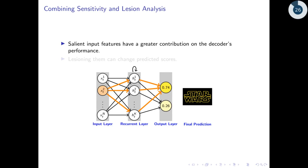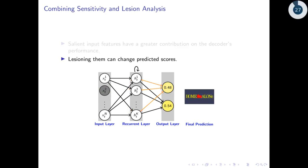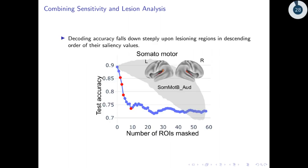Both saliency and lesion analysis help us highlight brain regions that are important for predicting task conditions. To relate the two, we tested if regions with higher saliency values should have larger effects on decoder prediction when lesioned. We sequentially excluded regions progressing from the highest to the lowest saliency values and found that prediction accuracy decreases sharply after excluding the most salient regions.